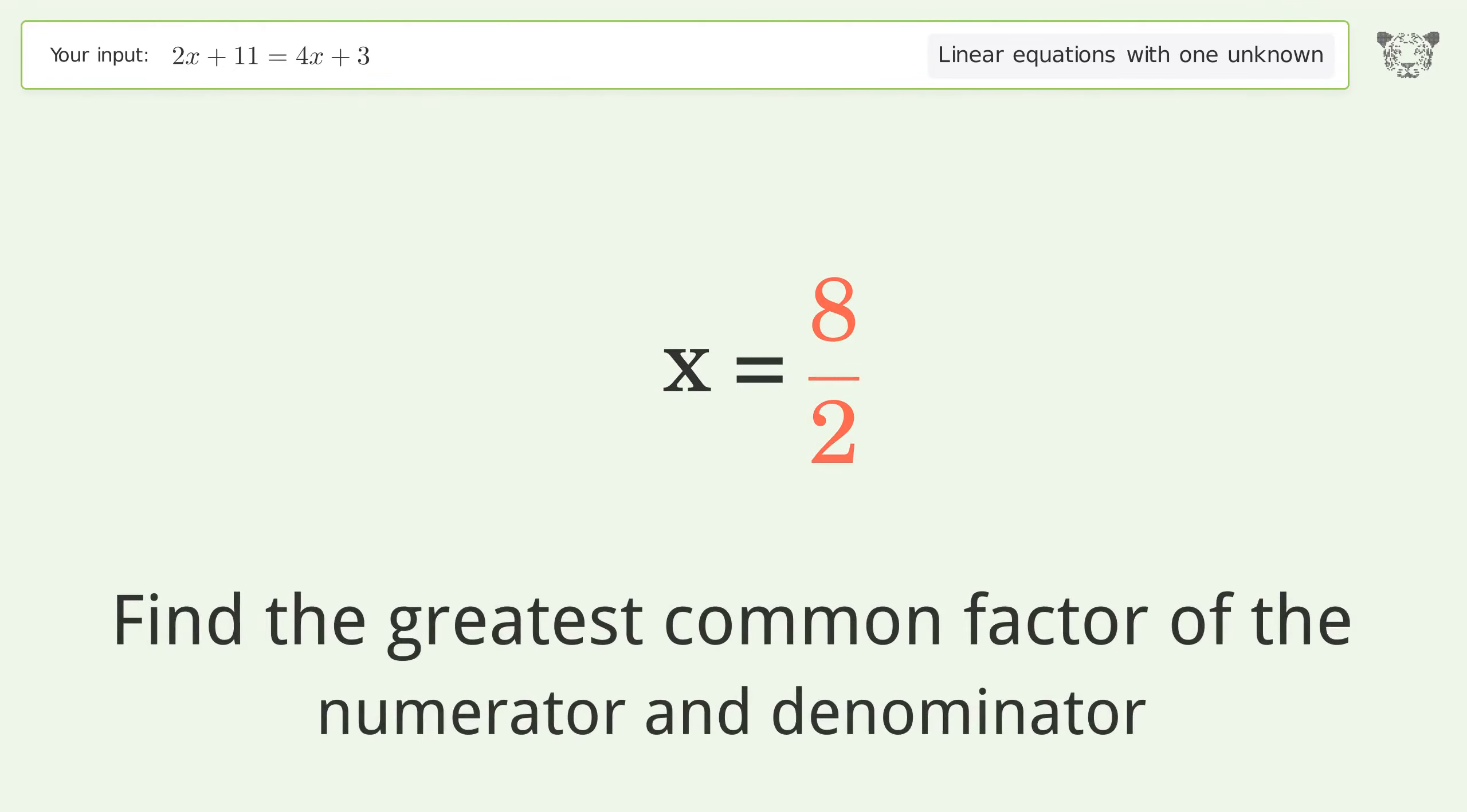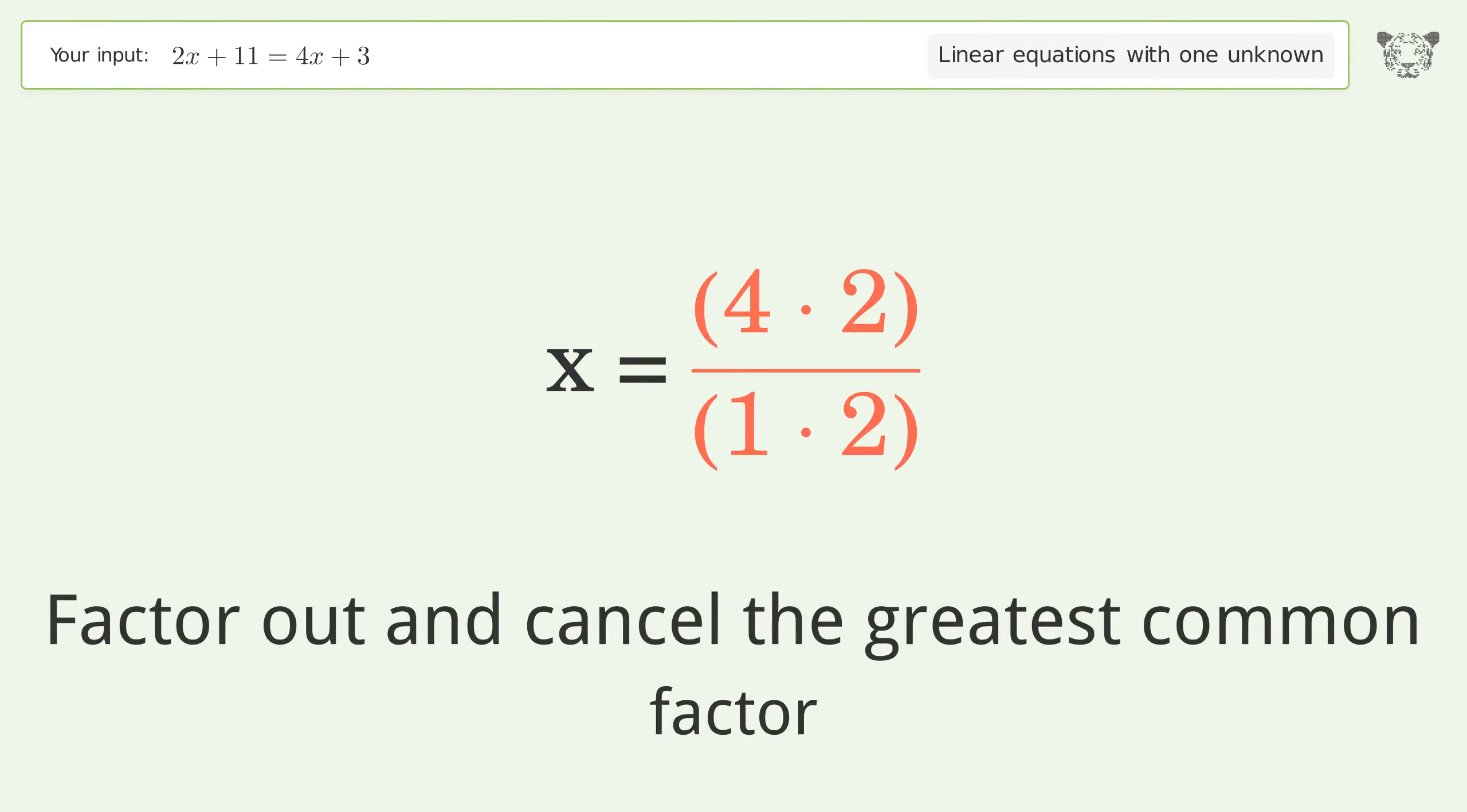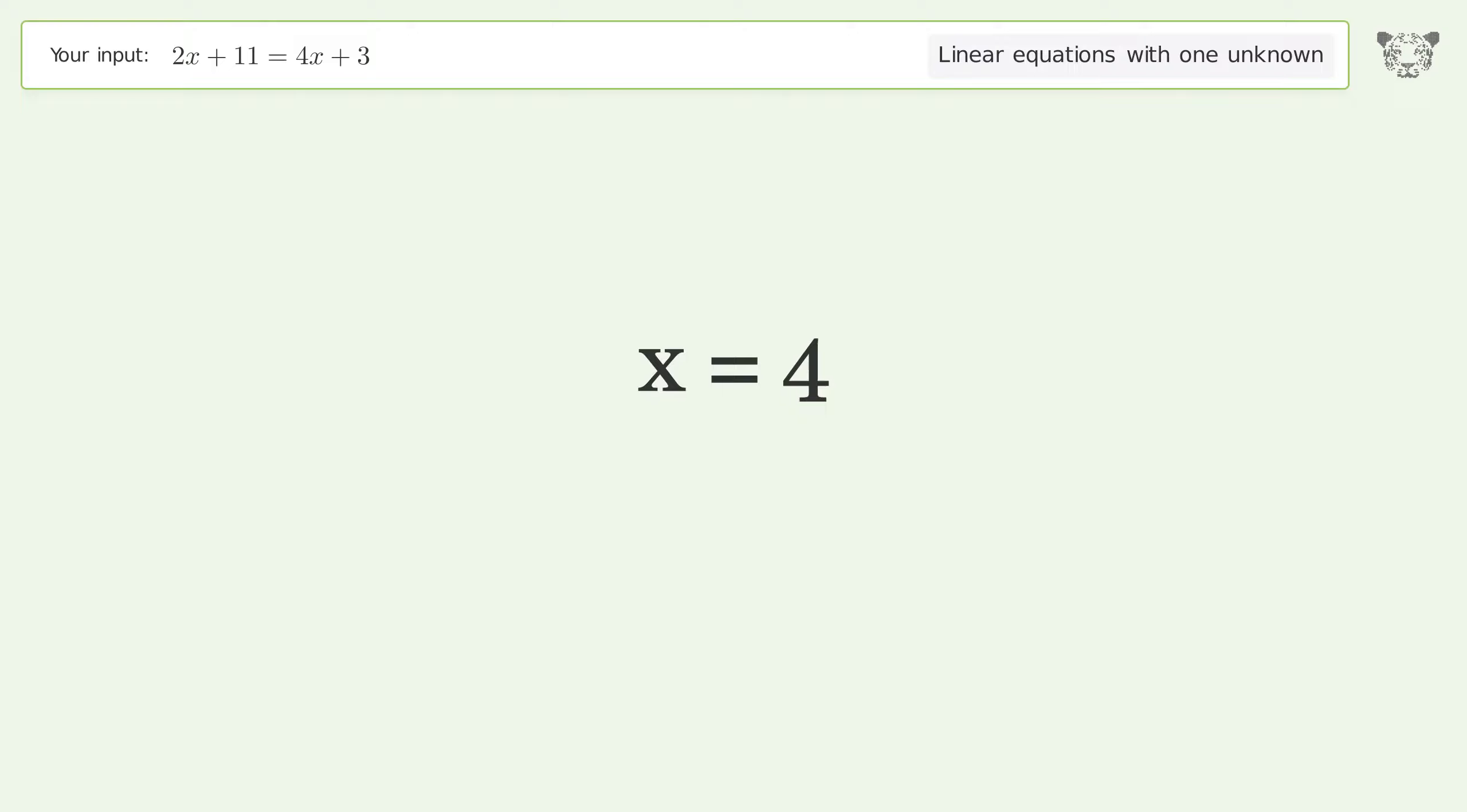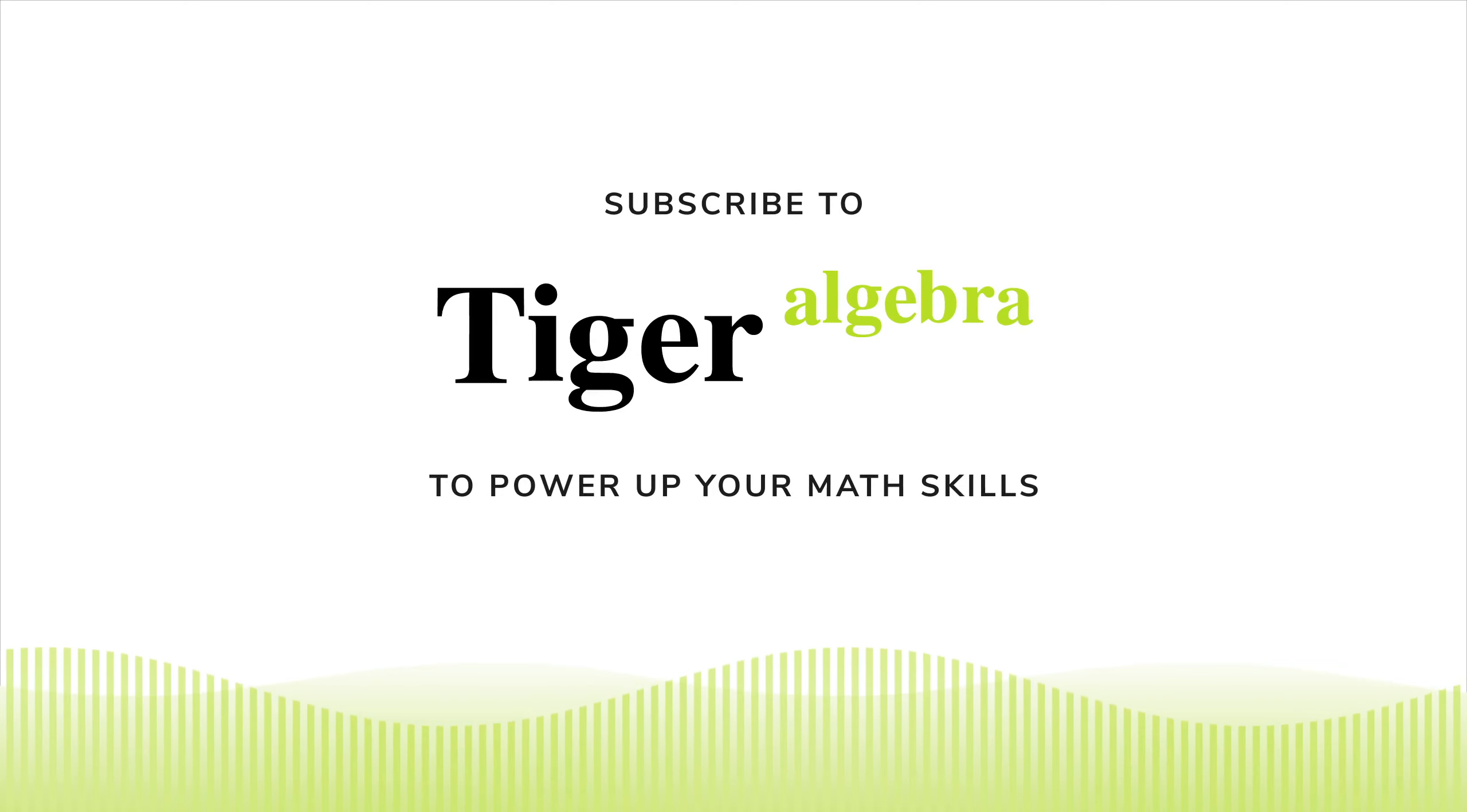Find the greatest common factor of the numerator and denominator. Factor out and cancel the greatest common factor. And so the final result is x equals 4. Go for it. Thank you.